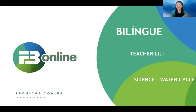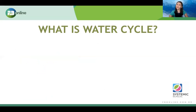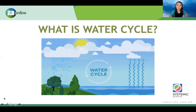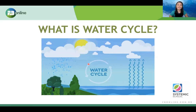Today we're going to talk about the water cycle. Teacher Lily, what is a water cycle? Remember, I just told you — the water cycle is this process. As you see in the picture, it's the process that the water goes up to the sky and goes down to the earth. The water cycle goes up to the sky and goes down — comes back to the ground, or in this case, to the sea.